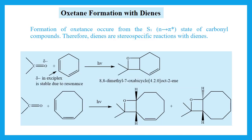Next is oxetane formation with dienes. Addition of carbonyl compounds to conjugated dienes is also feasible. The energy of the triplet state of the diene is usually less than that of carbonyl compounds; however, oxetane formation competes successfully with energy transfer because the diene quenches the triplet state. Thus oxetane formation occurs from the singlet state of carbonyl compounds.